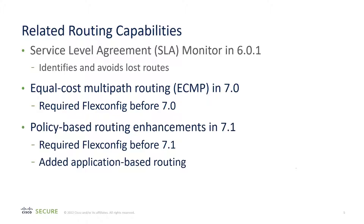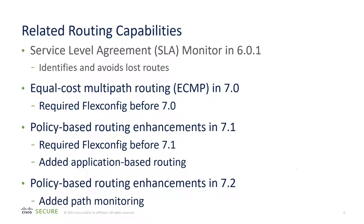We had a similar situation with policy-based routing — it required FlexConfig. In the 7.1 release, we moved that into the Management Center. At the same time, we added application-based routing, allowing you to base your routing decisions on the application being accessed. Now, in the 7.2 release, we added path monitoring to policy-based routing. That is the focus of this presentation and demonstration.